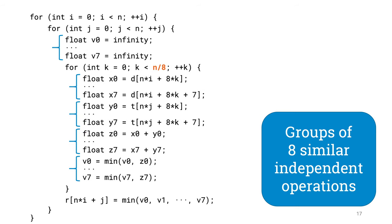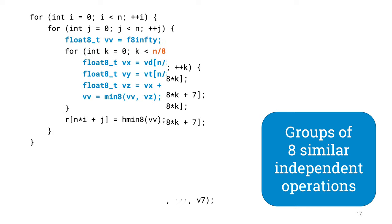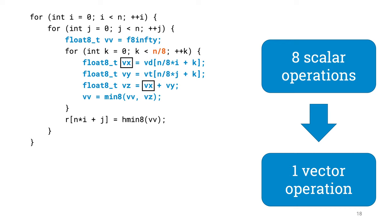And if n happens to be a multiple of 8, we can easily go much further — here we have groups of 8 similar independent operations. This should give nice instruction-level parallelism, but that's not what we are interested in here. The key point is that we have now written our code so that there are places where we could replace 8 scalar operations with one vector operation. Now we are finally ready to use our vector hammer. Wherever we had 8 individual variables x0 to x7, we now have just one vector variable vx. And wherever we had 8 scalar additions, we have got one vector addition.